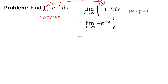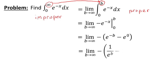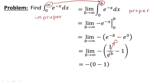Now we've just got to plug b and 0 in. We can simplify because we know that e to the negative b is just going to equal 1 over e to the b, and we know that e to the 0 is just going to be 1. Now it's easy to apply that limit as b approaches infinity. As b approaches infinity, this b is going to get really big, so the denominator is going to get enormous. When you have 1 over an infinitely big denominator, you get an infinitesimally small value, so this goes to 0. Our 1 just stays the same. So this is just going to be equal to negative quantity 0 minus 1, and distributing that negative sign, we're just left with 1.